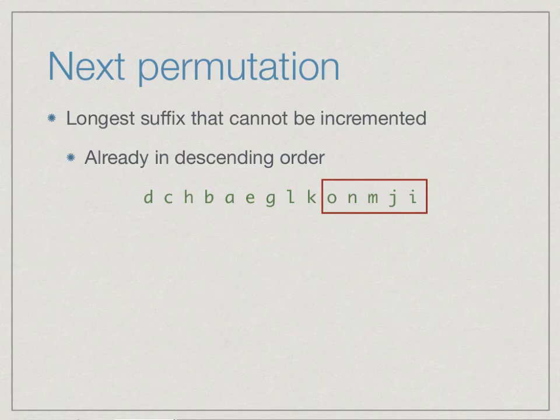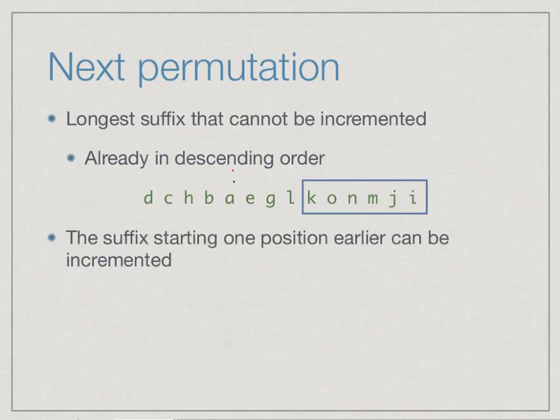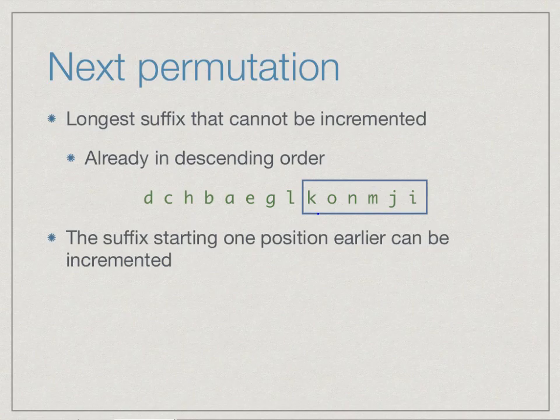If we look at the example, this suffix o n m j i, these five letters are in descending order. I cannot make any larger permutation using this. If I fix the letters from d to k, then this is the largest permutation I can generate with d to k fixed. So if I want to change it, I need to increment something, and I must extend this to find the shortest suffix, namely the suffix starting with k, where something can be incremented.